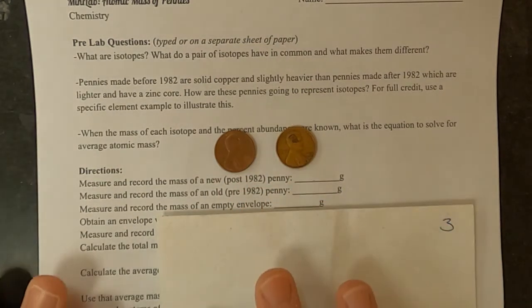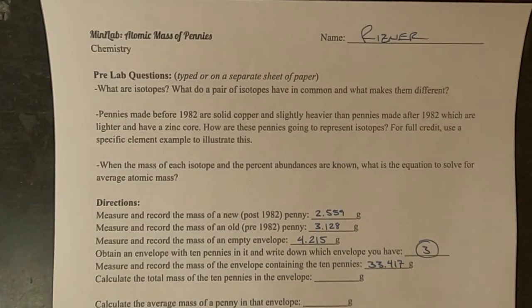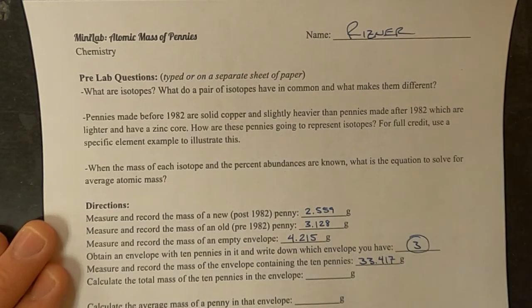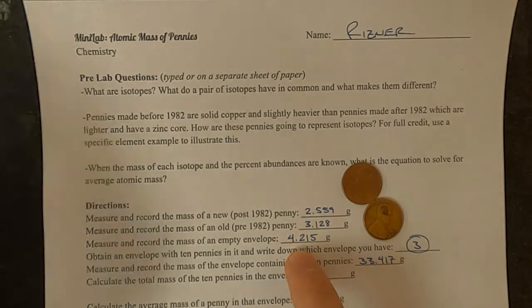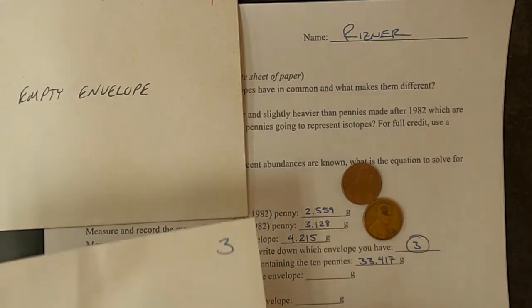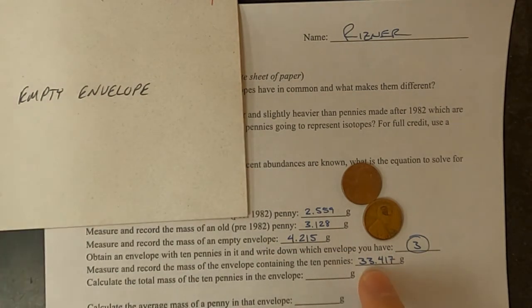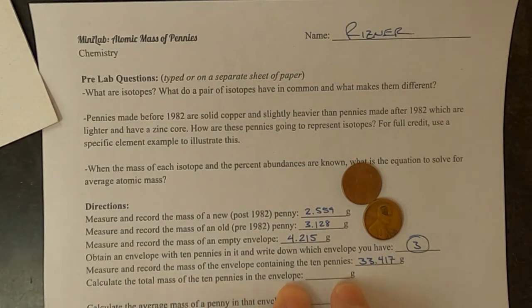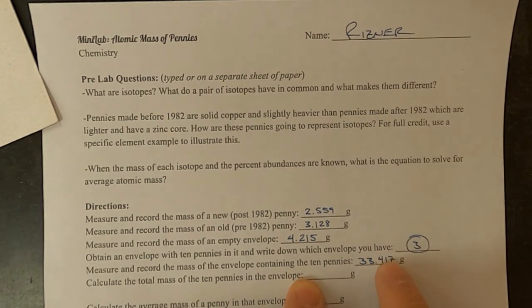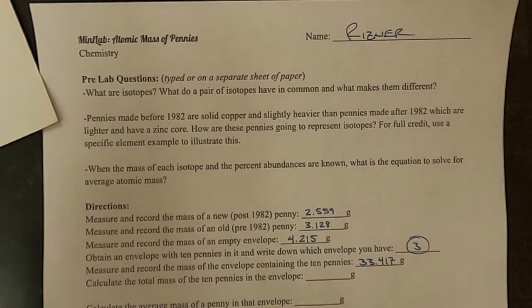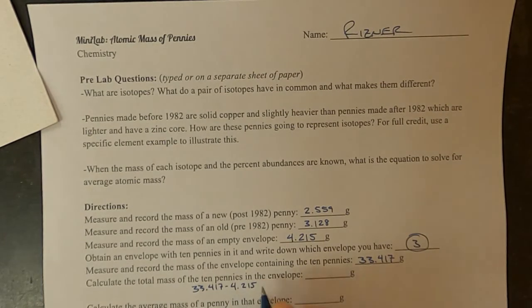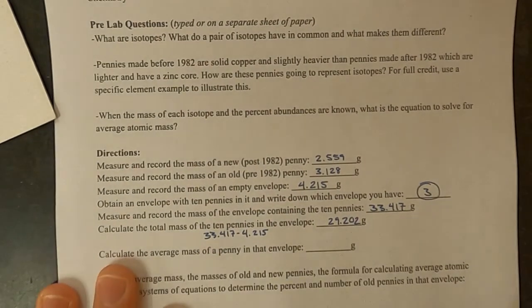I'll get these out of the way, collect some data. So the only data you need to collect would be the mass of the new penny, the mass of the old penny, the mass of an empty envelope, which envelope do you have, and its total mass. Now I'm going to calculate the total mass of the 10 pennies in the envelope, which means I'm going to be subtracting this, which was the 10 pennies with the envelope, and I'm going to be subtracting 4.215 from it.